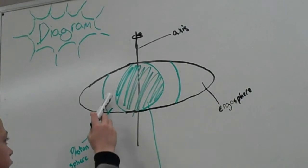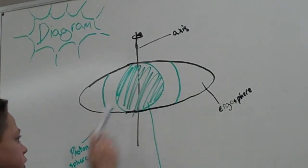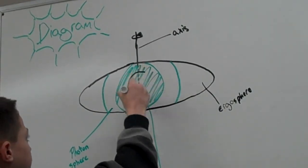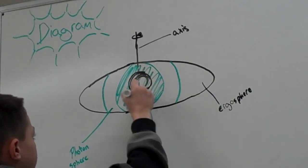Then inside the ergo sphere, here, is the photon sphere. And then inside the event horizon is the black hole itself.